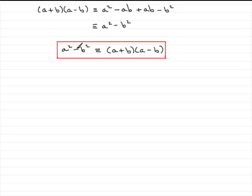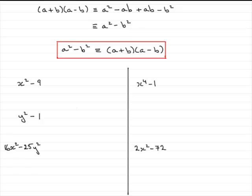Why is it called the difference of two squares? Well, we've got the difference sign here — the minus sign. It's the difference between a, which is squared, and b, which is squared. The difference between two squares. And it has this pattern structure. So let's have a look at some examples that have got that particular pattern structure.